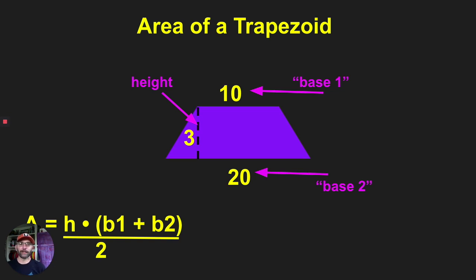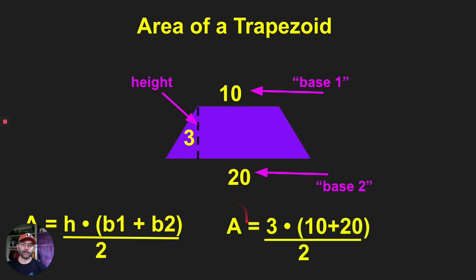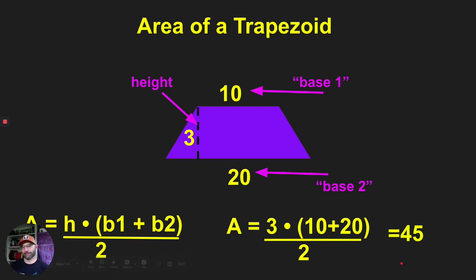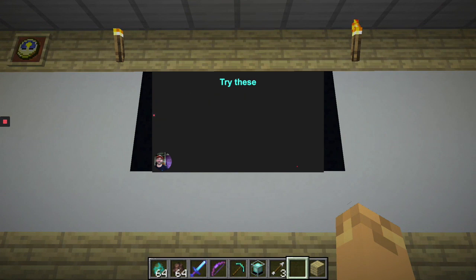You should have: area equals three (the height) times the quantity ten plus twenty. Ten plus twenty is thirty — remember we do parentheses first — so thirty times three is ninety. Then ninety divided by two gives you forty-five. That's it!